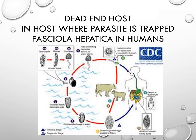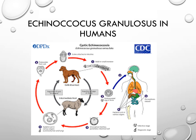Next is the dead end host — a host where the parasite is trapped and cannot escape or be transmitted to any other host. An example is Fasciola hepatica in human beings, when they accidentally ingest it through contaminated liver, contaminated water, or by eating infected snails or mollusks. The parasite is trapped in the human body and cannot be transmitted further, making the human being a dead end host.